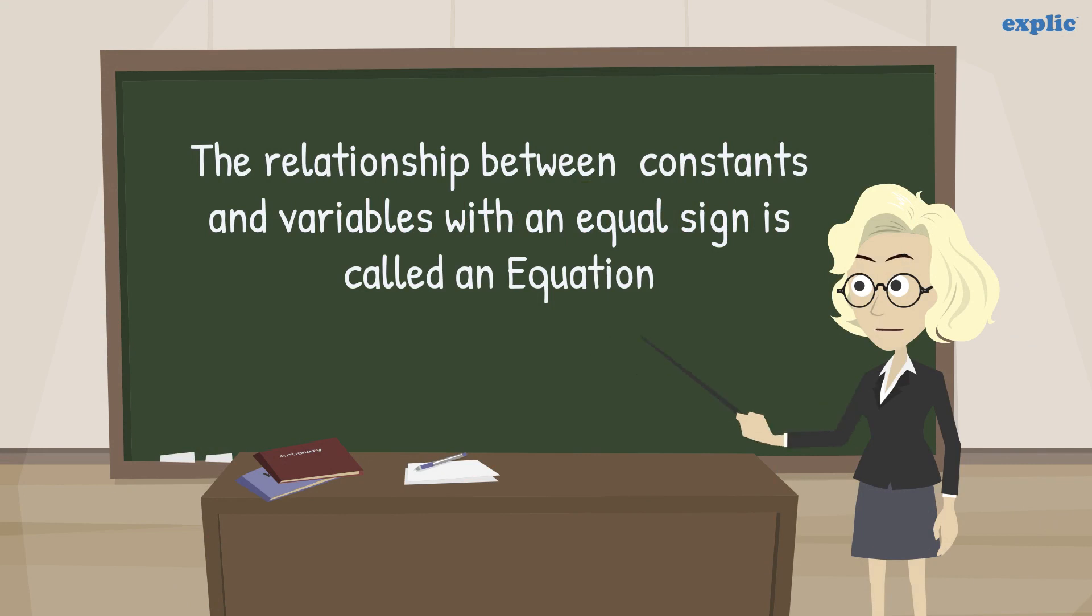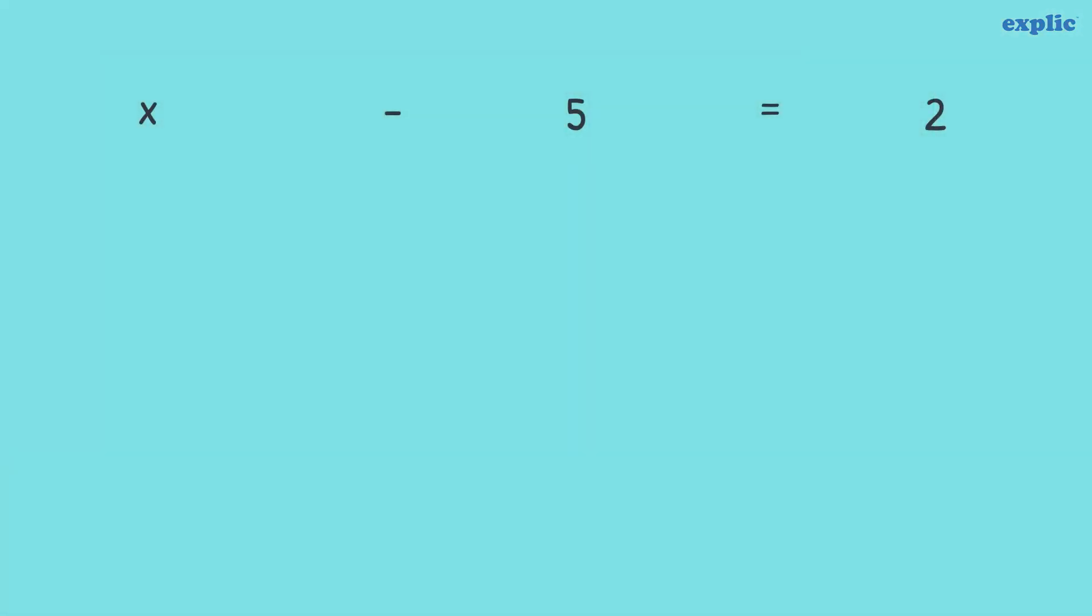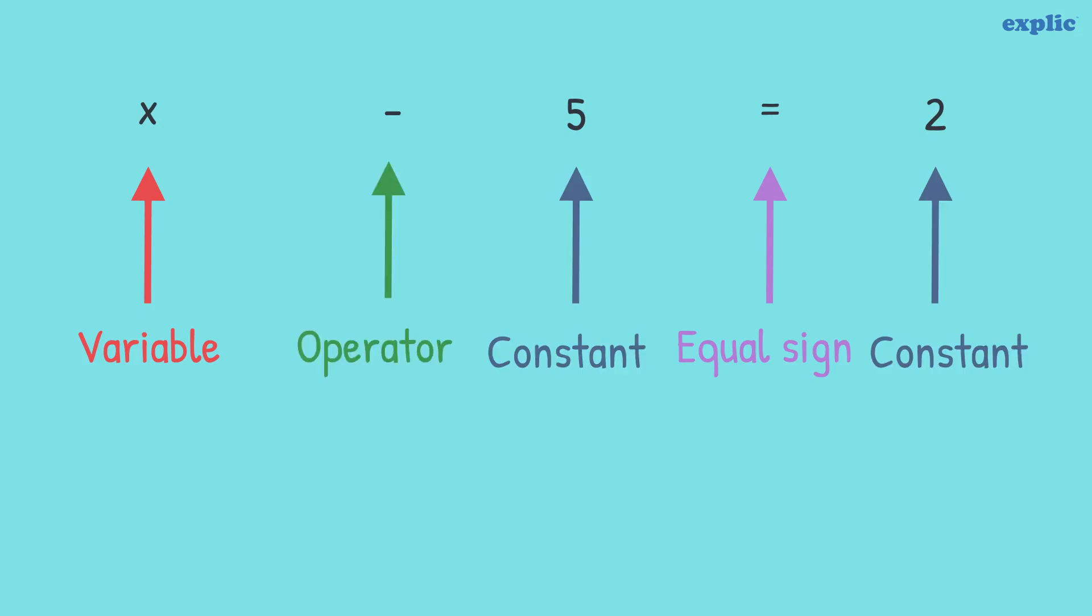As we already know, the relationship between constants and variables with an equal sign is called an equation. An equation is the combination of variables, an equal sign, constants and mathematical operators.